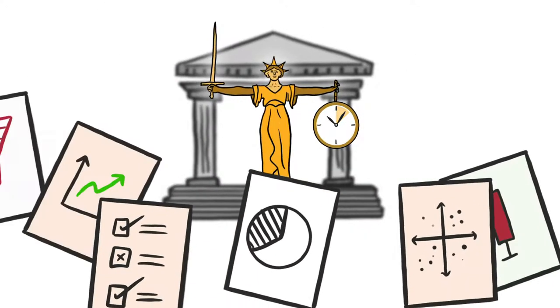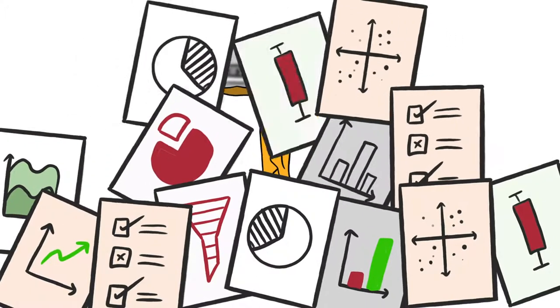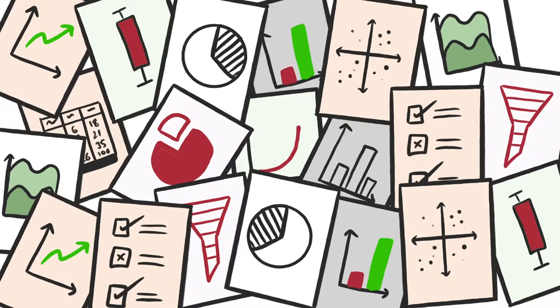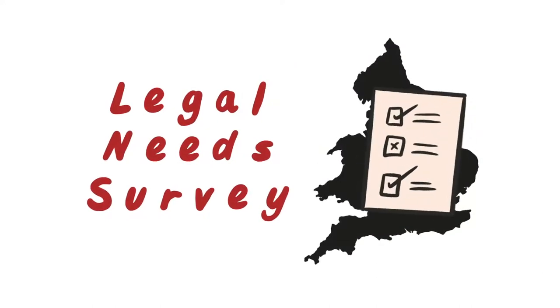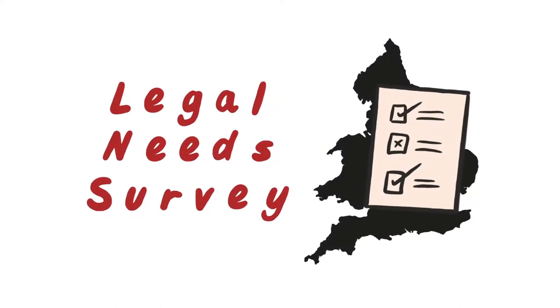We use lots of evidence and data from many sources to help us do this. Legal needs surveys use large scale general population questionnaires to help us build a picture of the types of justice issues people have, how they deal with them,